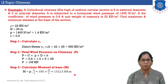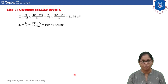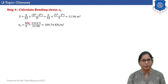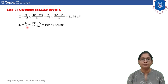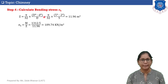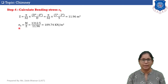Step number four: calculate bending stress sigma b using the equation sigma b equals M upon Z. First we calculate Z, the section modulus. For a circular section, Z equals (π/32) times (D⁴ minus d⁴) divided by D, where capital D is 5 meters and small d is 2 meters. This gives Z equals 11.96 m³. Substituting into the equation for sigma b gives sigma b equals 109.74 kN/m².